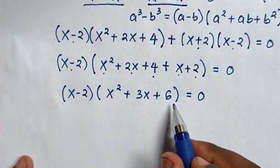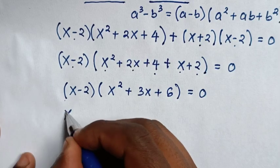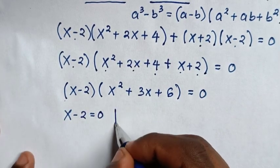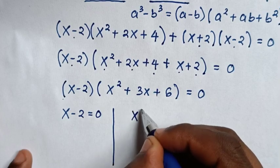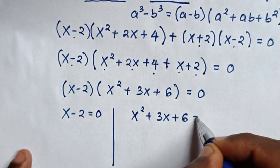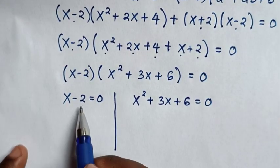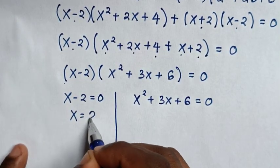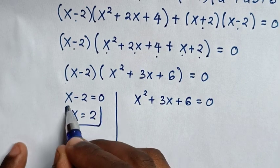We now have two solutions. The first solution is x - 2 = 0, and the second is x² + 3x + 6 = 0. Taking negative 2 to the right side, x = 2, so this is the first value of x.